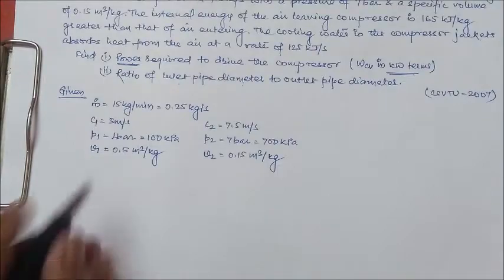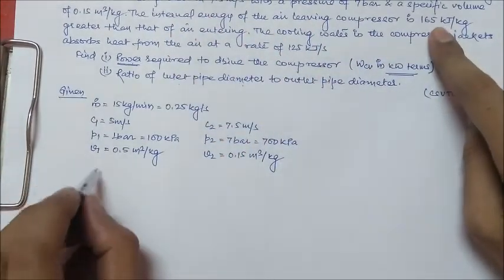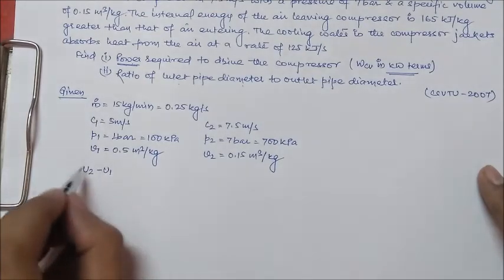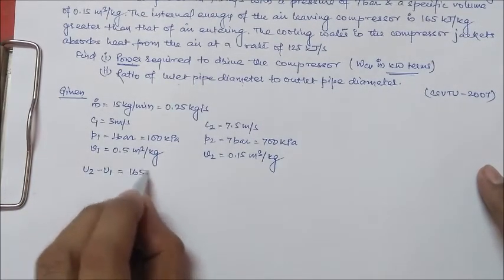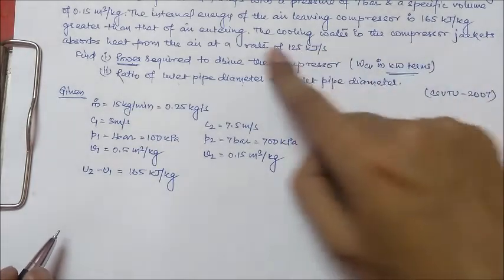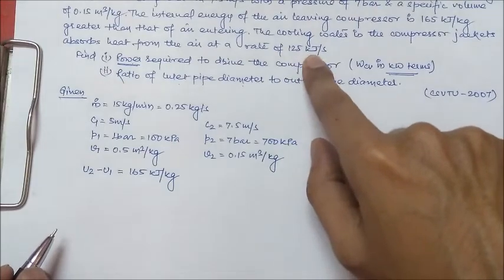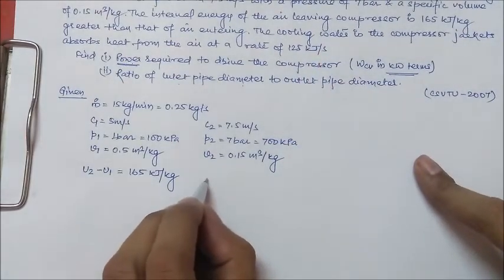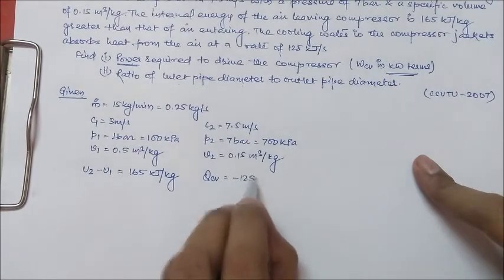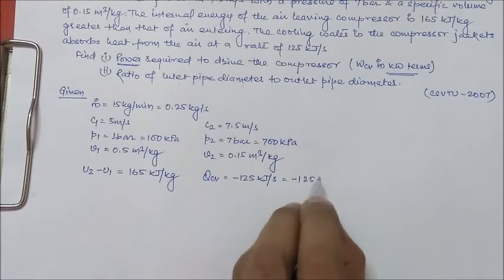It says that the internal energy change between the outlet and inlet is U2 minus U1, which in specific terms is 165 kJ per kg. Also, the cooling water in the compressor jacket absorbs heat from the air at a rate of 125 kJ per second, which means the air is losing heat, so QCV is minus 125 kJ per second, which is nothing but minus 125 kW.